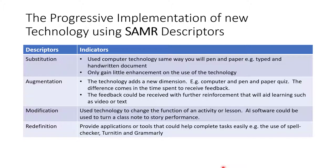The third descriptor is modification. You use technology to change the function of an activity, section, or lesson. For example, AI software could be used to turn a class note into a story performance. When this happens, you are modifying.